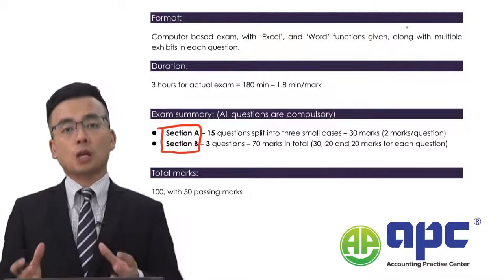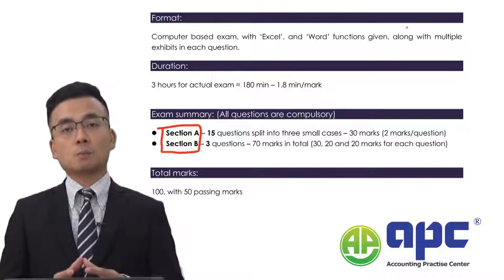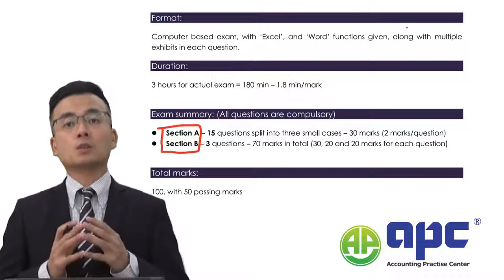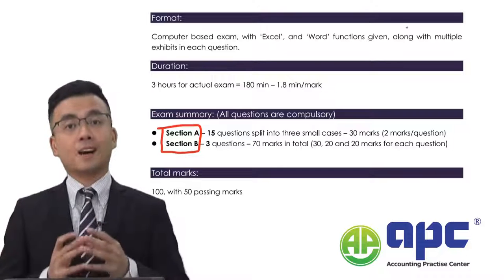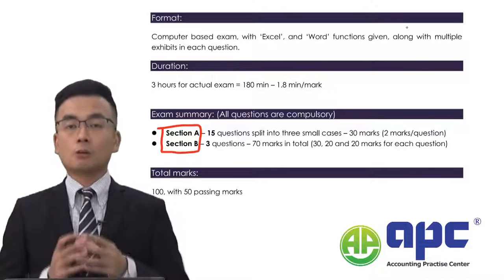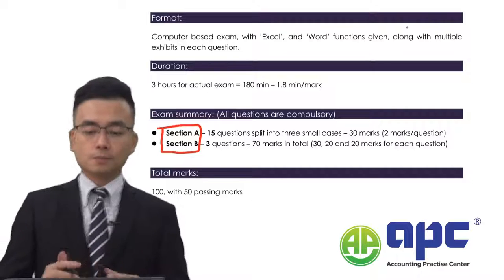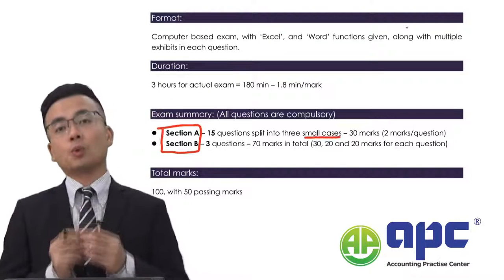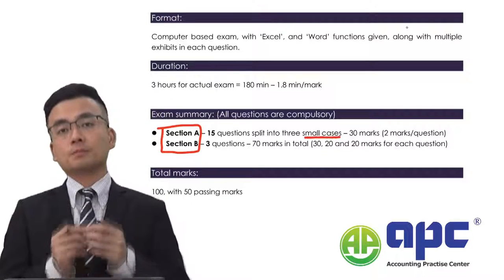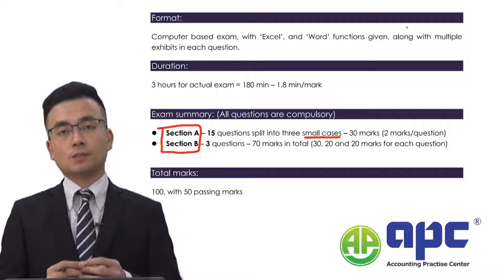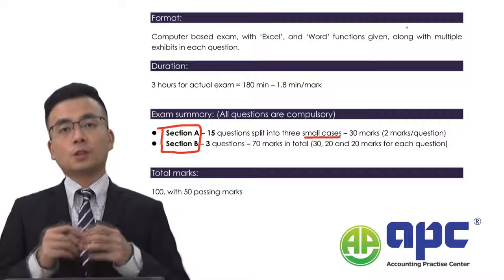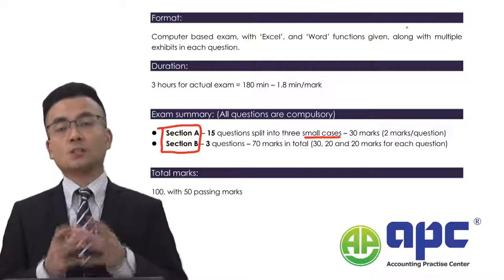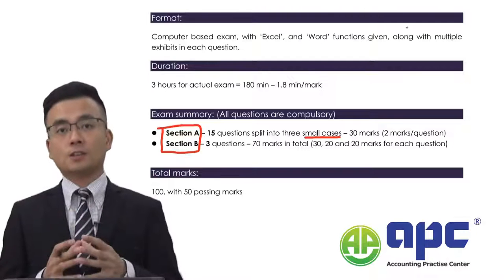Total 100 marks, 50 will be the passing mark, three hours — so in other words, you are only given 180 minutes. For Section A, there will be three cases, each with five multiple-choice questions, two marks per question, meaning a total of 30 marks.